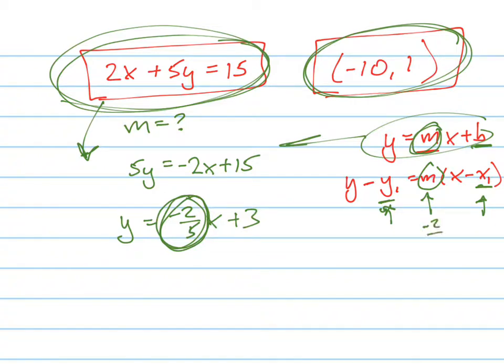So now I have what? I have the slope because they're parallel. So, and I have a point, where do I put the negative 10? It's the x. Where do I put the 1? It's the y. So what's my equation?